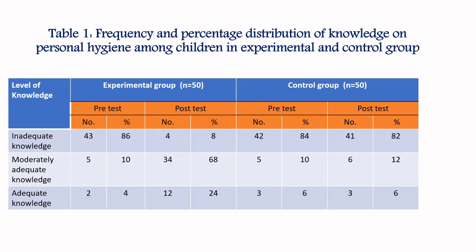Table 1 shows the frequency and percentage distribution of knowledge on personal hygiene among children in experimental and control groups. In the experimental group, 43 children had inadequate knowledge in the pre-test, dropping to only 4 in the post-test. Moderately adequate knowledge was held by 5 in the pre-test and 34 in the post-test, and adequate knowledge by 2 in the pre-test and 12 in the post-test. In the control group, 42 in the pre-test and 41 in the post-test had inadequate knowledge; 5 in the pre-test and 6 in the post-test had moderately adequate knowledge; and 3 in both pre- and post-test had adequate knowledge.